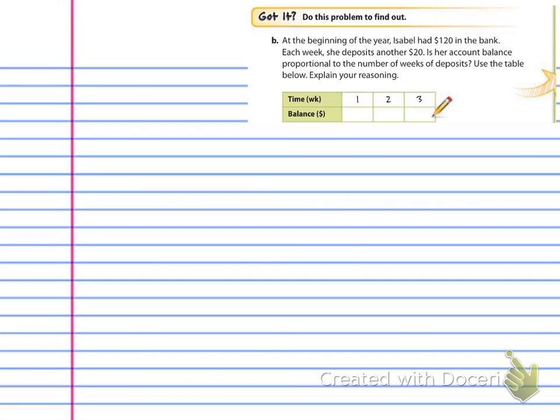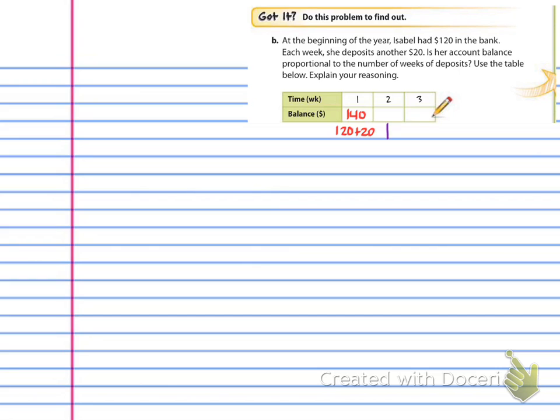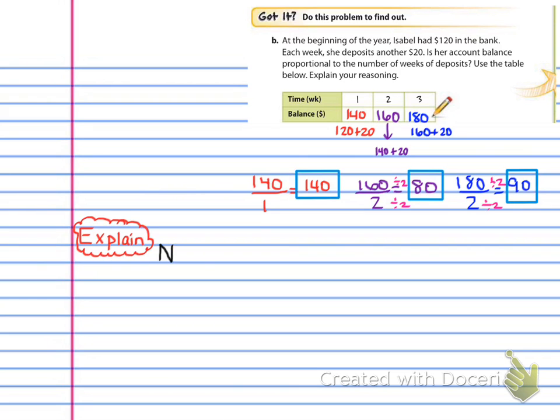Go ahead and try the Got It now. Pause the video and start. So now we're looking at the Got It problem. And the first thing you wanted to do, because it said she started with $120, was to take the $120 and then add the $20 deposit to it. So the first week she had $140. Do the same with the second week, she has $160. And then the same with the third week, she has $180. So then you should have simplified each one of those, and you would have gotten $140, $80, and $90. So obviously those are not the same. So the explanation you want is that no, the weeks to account balance ratios are not the same, so they are not proportional.